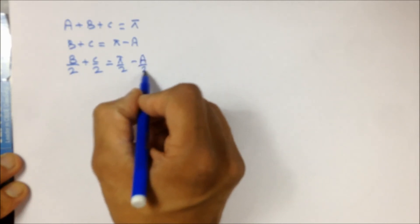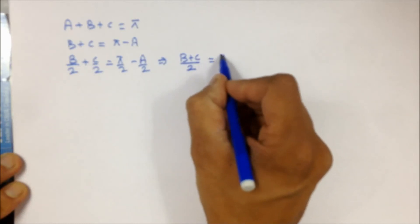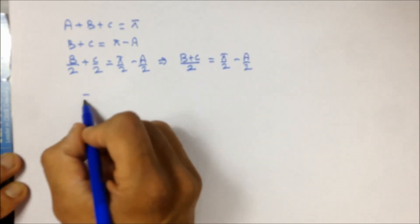Dividing by 2: (B+C)/2 = π/2 - A/2. We'll use this value of (B+C)/2 and put this in the expression.